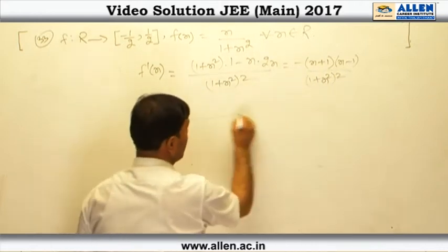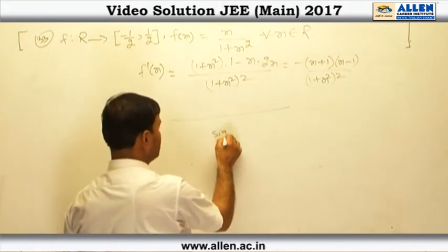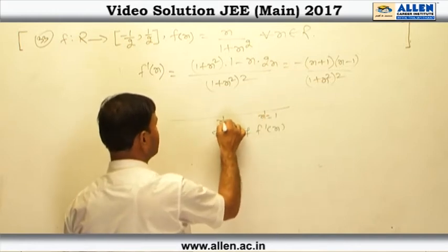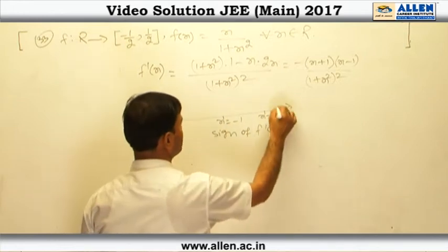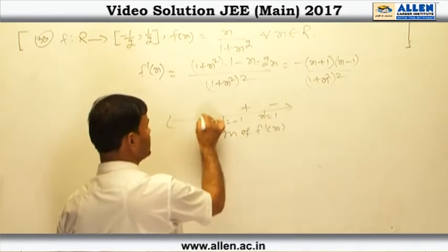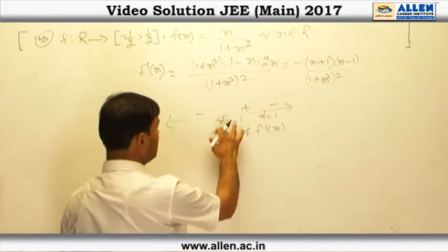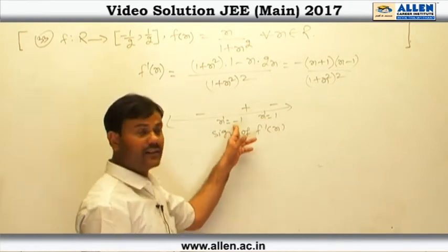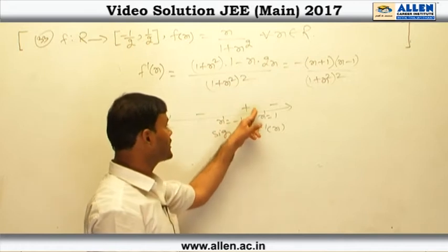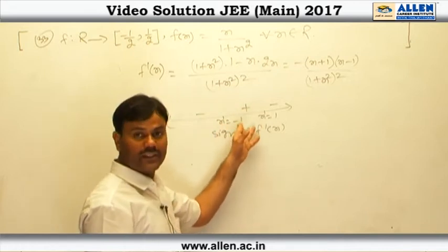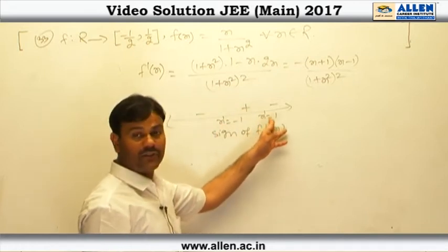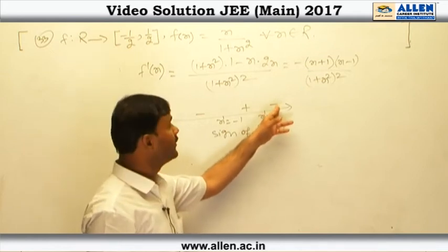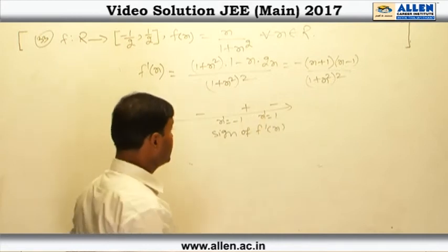Applying the sign of f'(x): at x = 1 and x = -1, the sign changes. The sign goes minus, plus, minus across these critical points. So x = -1 is a point of local minimum, where the sign of the derivative changes from minus to plus, and x = 1 is a point of local maximum, where the sign changes from plus to minus.